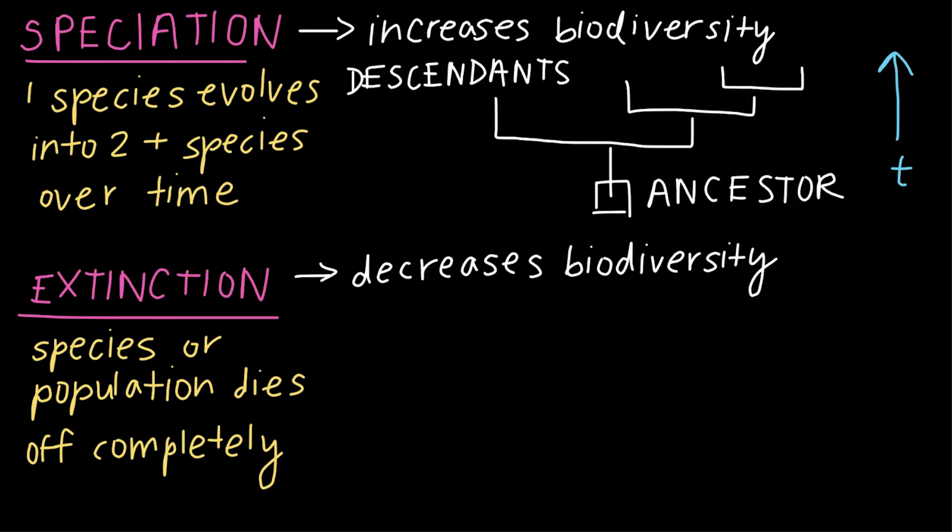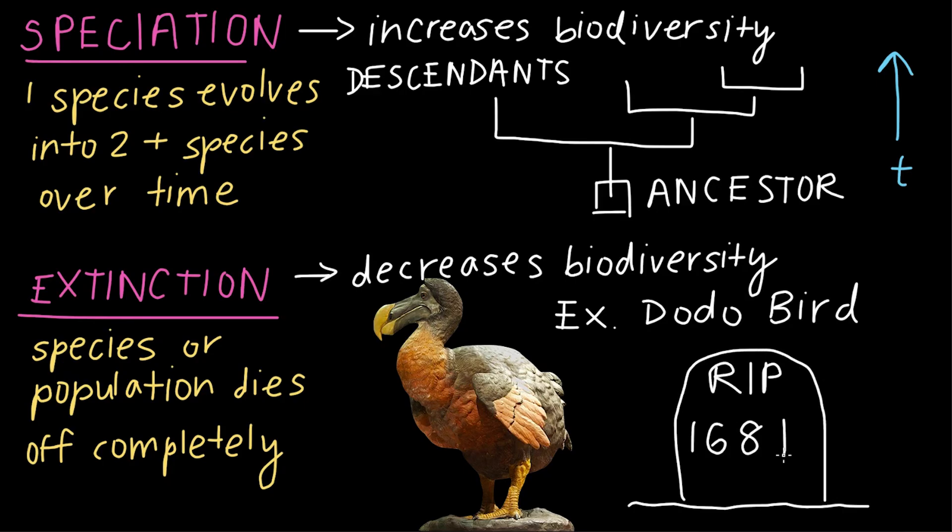So you might have heard of the dodo bird, which is a species that actually went extinct way back in the 1600s. So some of the major causes behind the dodo bird's extinction include overhunting, habitat loss, and competition with some newly introduced species. And unfortunately, the last dodo bird was reportedly killed in 1681. And even though we can't enjoy the presence of dodo birds anymore, learning about this extinct bird actually brings up a really good question.